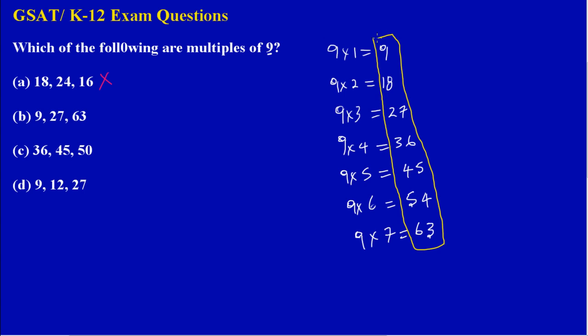So when I check option B, let's check if we see a nine there, there is a nine there. Let's check if we see a 27, yes, there is a 27 there. And let's check if we see a 63, yes, there is a 63 there. So obviously we have gotten our answer, our answer would be B.